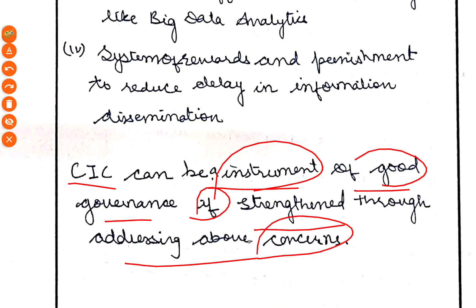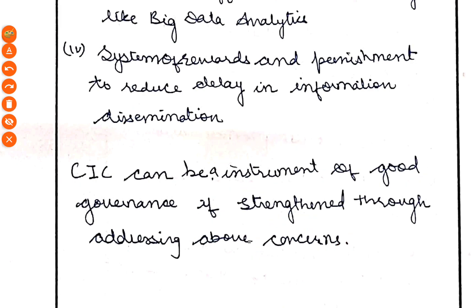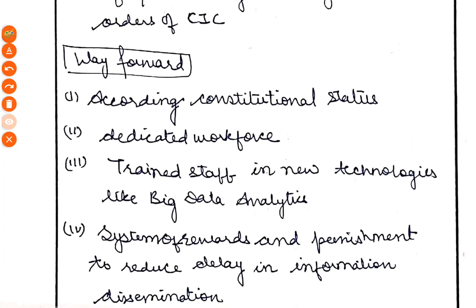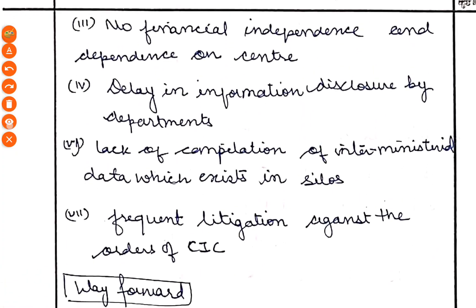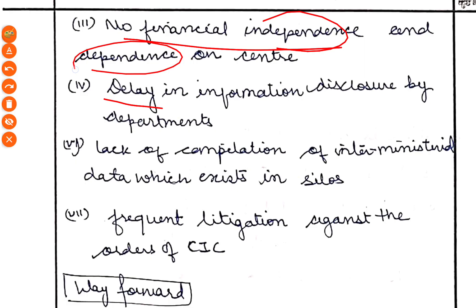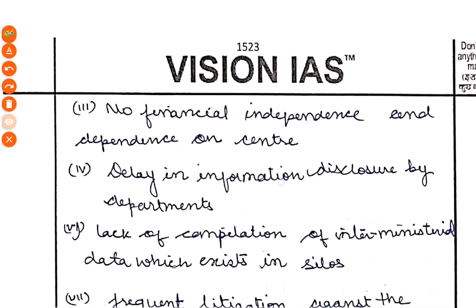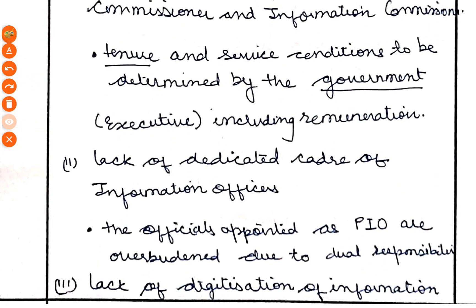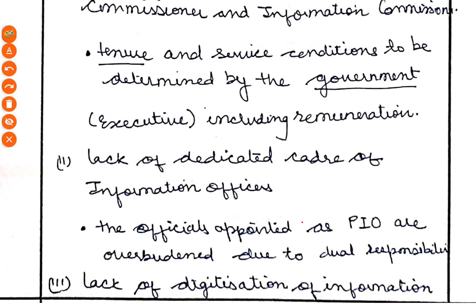The Central Information Commission can be an instrument of good governance if the above concerns and issues are tackled and the recommended reforms are implemented properly. Notice the common points — most regulatory bodies share issues like delay, financial dependency on the centre, lack of integration of data, and lack of technological upgradation. These are recurring points you can apply across answers. Digitalization is also a point you will see repeatedly. So through this answer booklet, we are trying to understand this pattern.